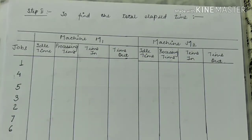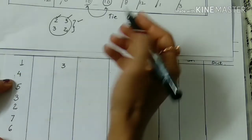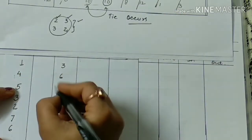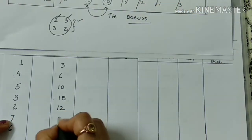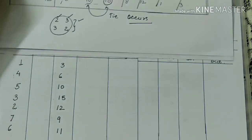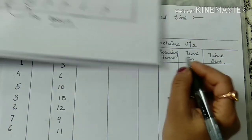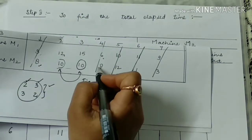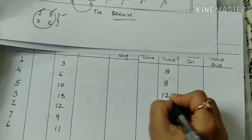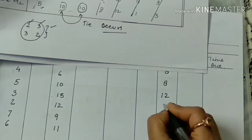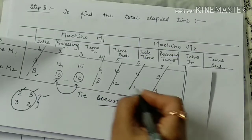For machine M1, the processing times are: job 1 = 3 hours, job 4 = 6 hours, job 5 = 10 hours, job 3 = 15 hours, job 2 = 12 hours, job 7 = 9 hours, job 6 = 11 hours. For machine M2: job 1 = 8 hours, job 4 = 8 hours, job 5 = 12 hours, job 3 = 10 hours, job 2 = 10 hours, job 7 = 3 hours, job 6 = 1 hour.